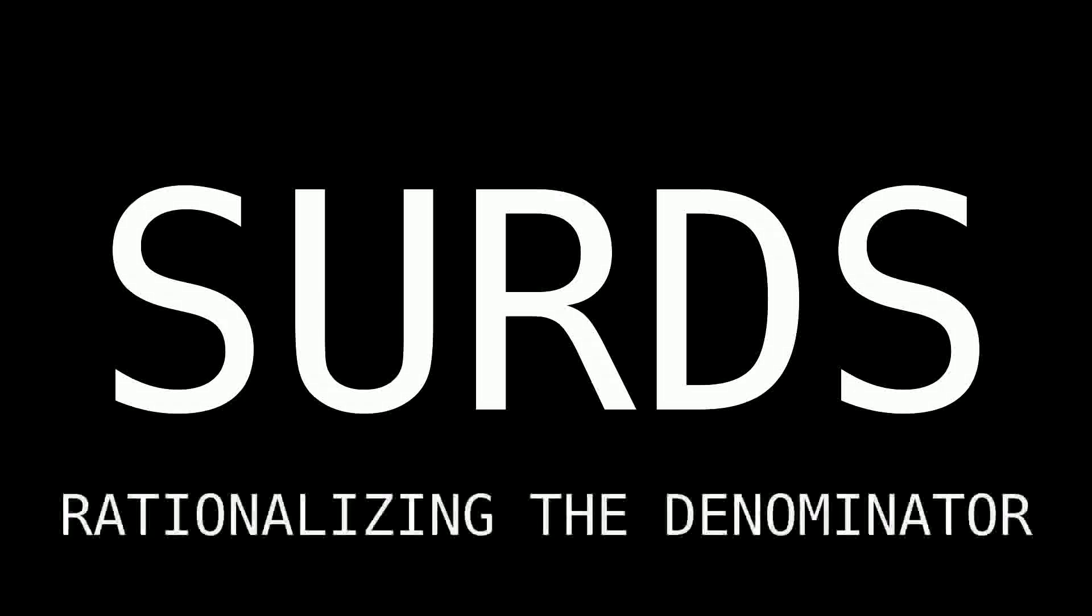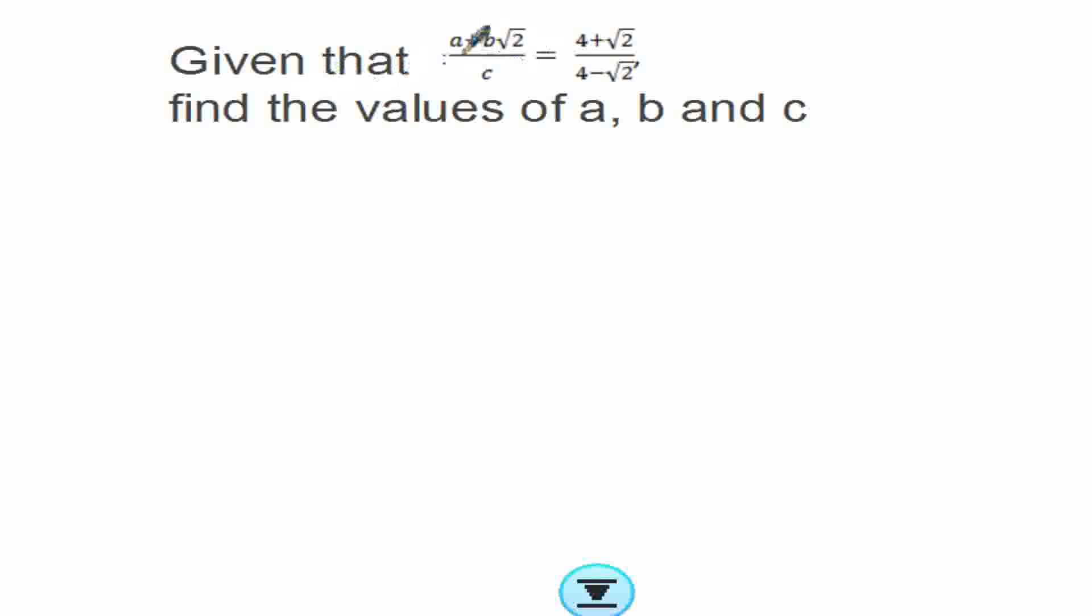In this video we're going to learn how to rationalize a denominator. This is our question: given that a plus b root 2 over c is equal to 4 plus root 2 over 4 minus root 2.